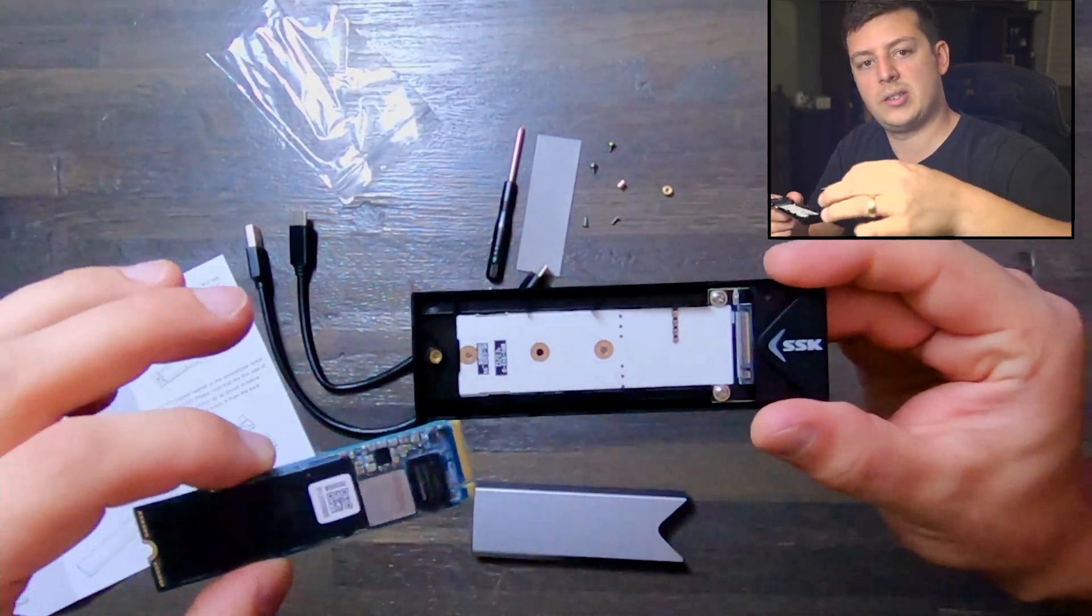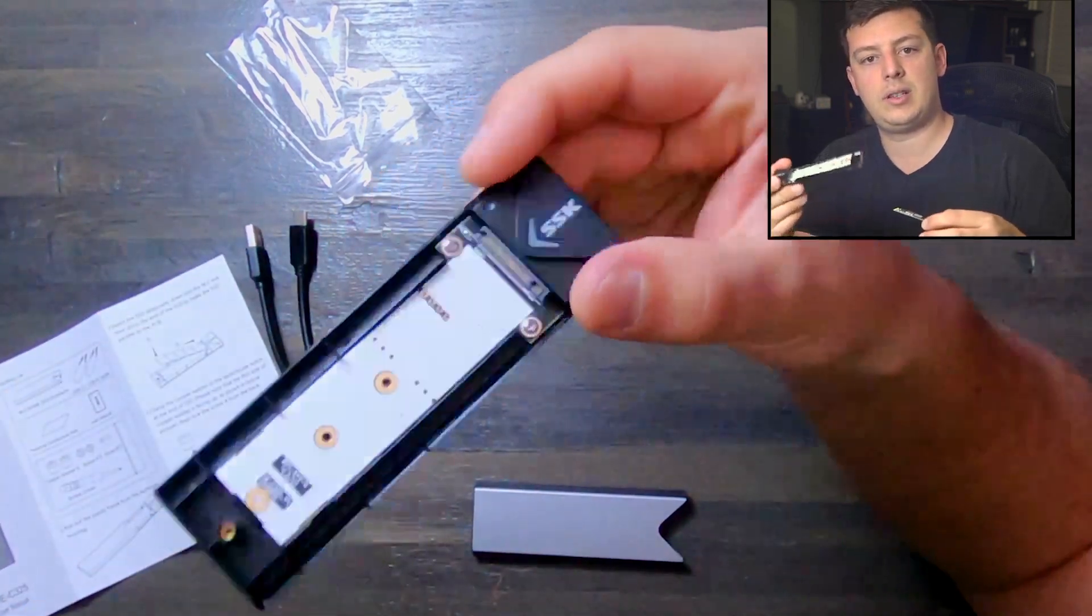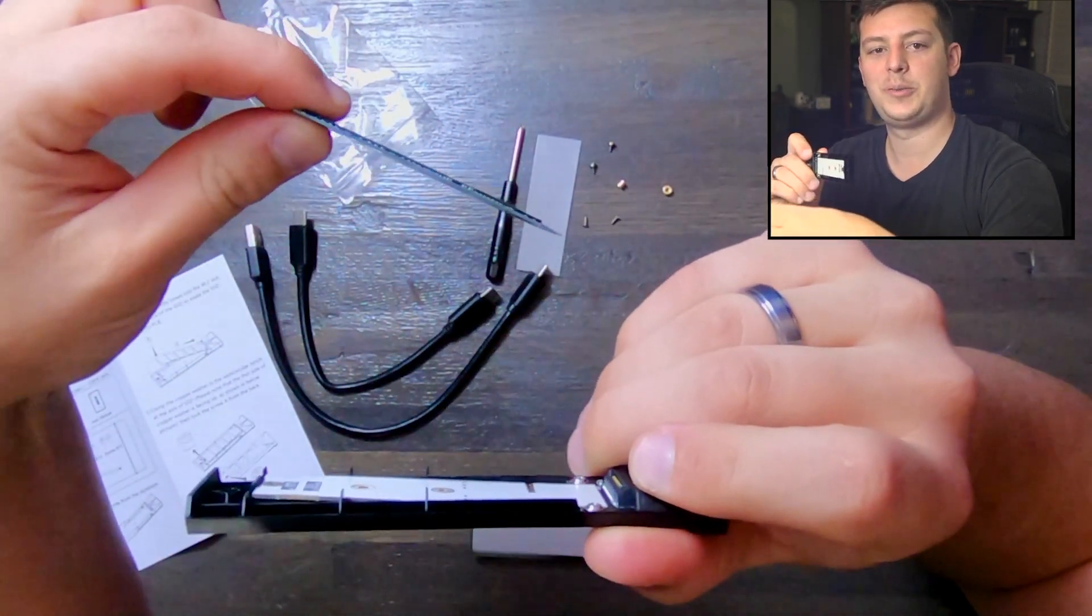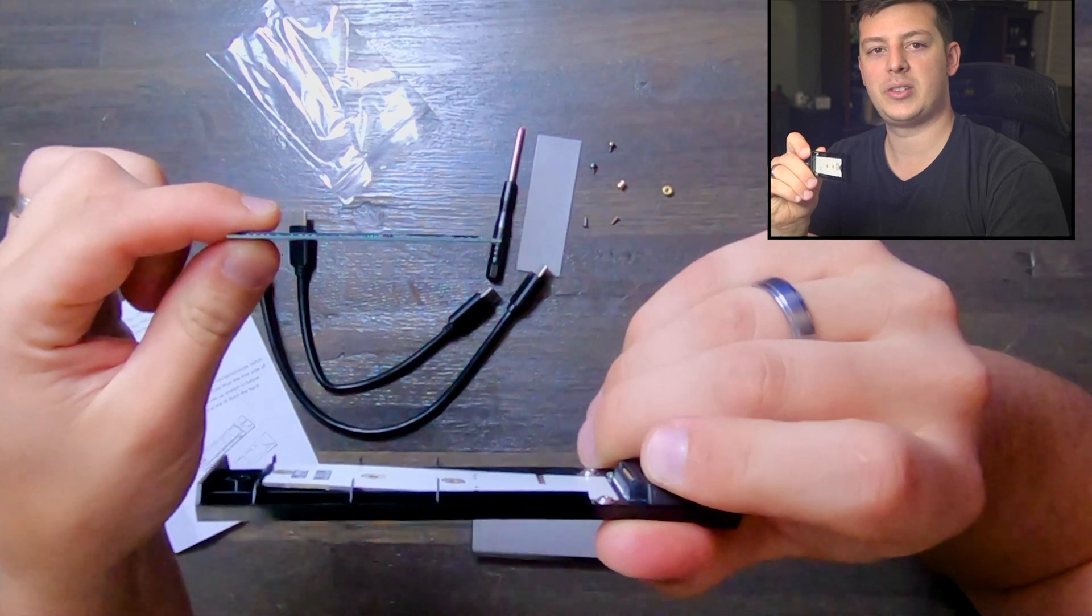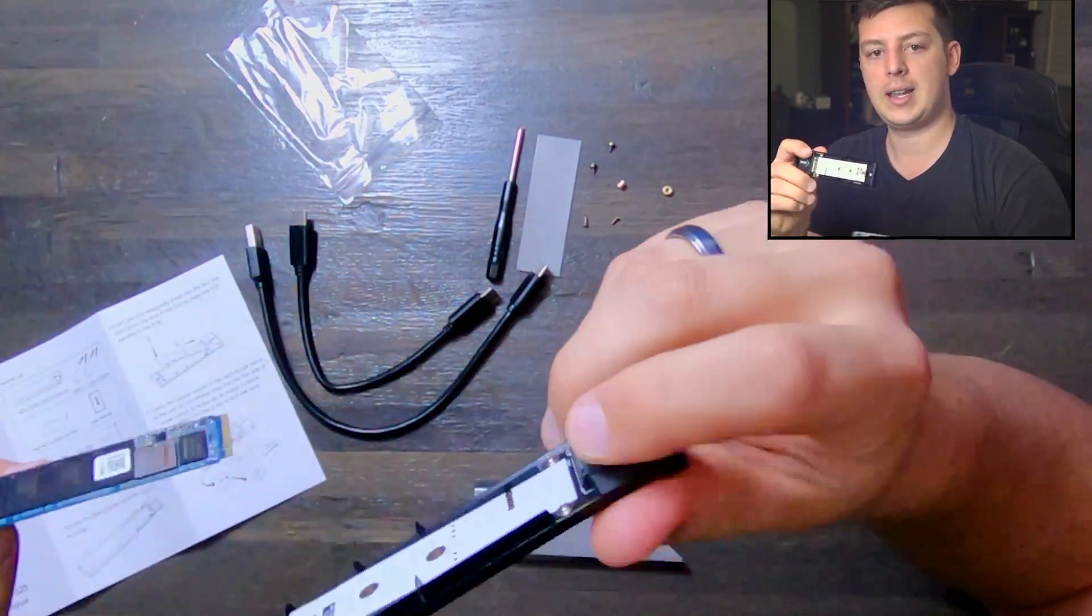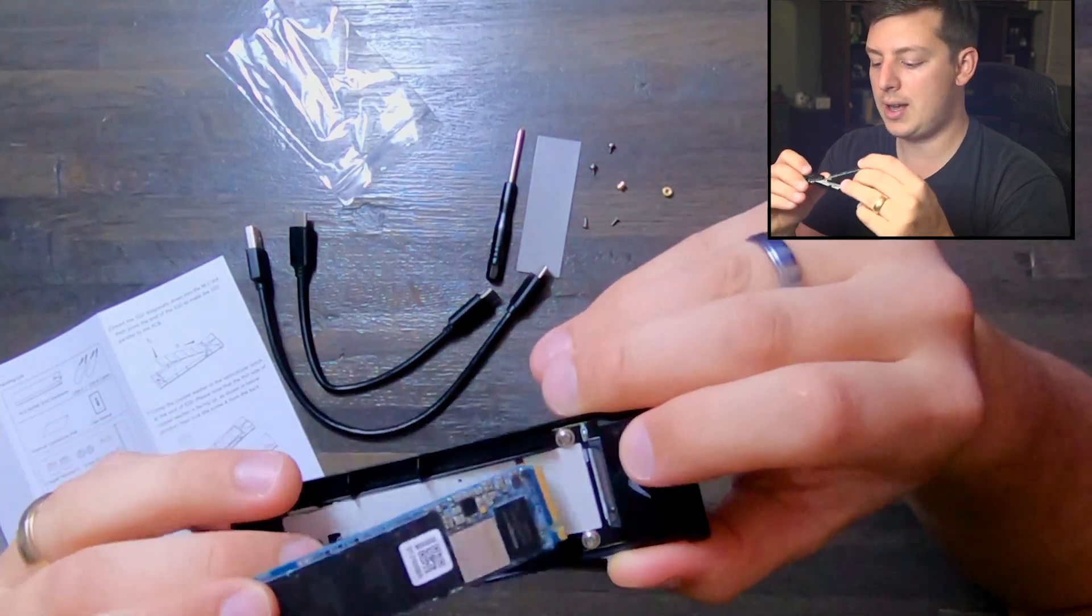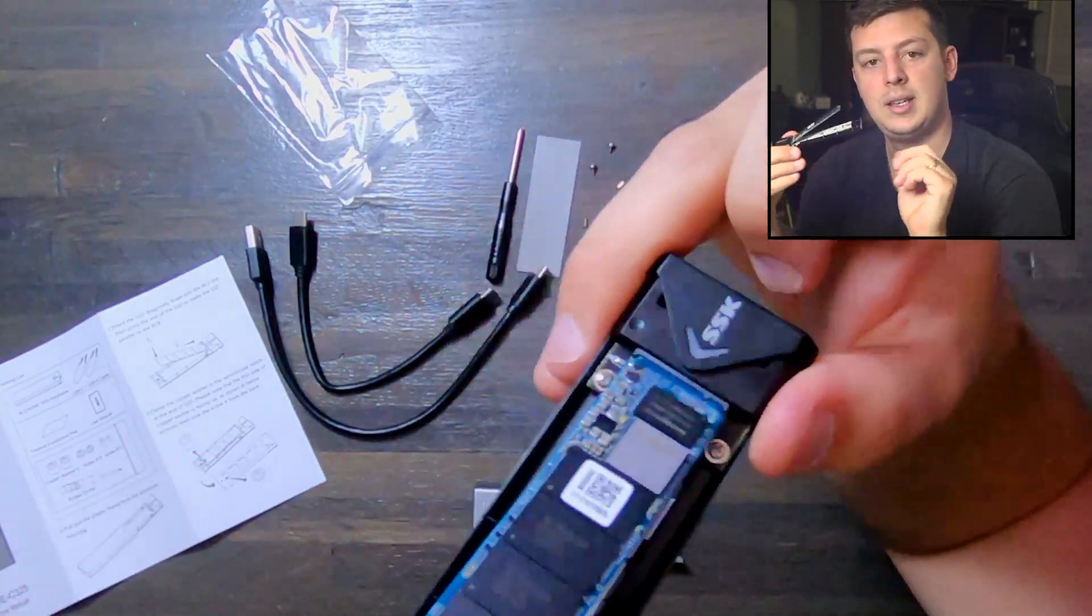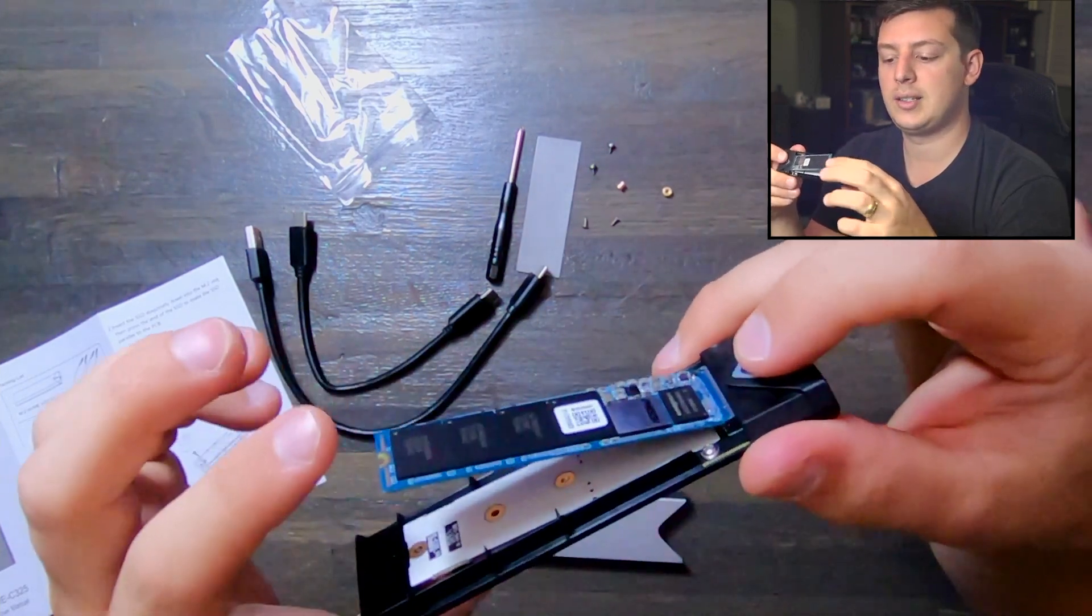The instructions say to insert this at a diagonal angle. Because this has a little bit of a slope, we want to not put it in perfectly straight but at a slight angle and slowly guide it into the pins. That's going to click into place and the SSD will rise up here.